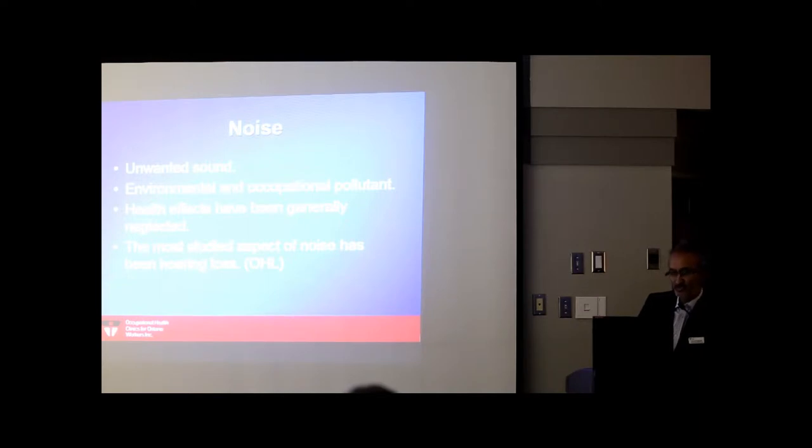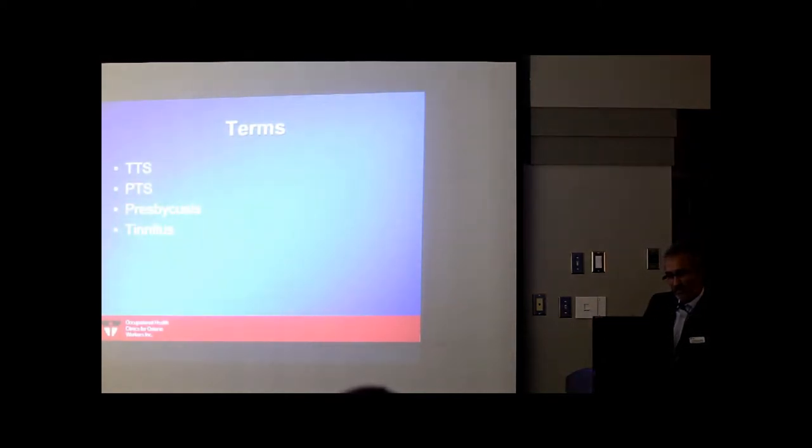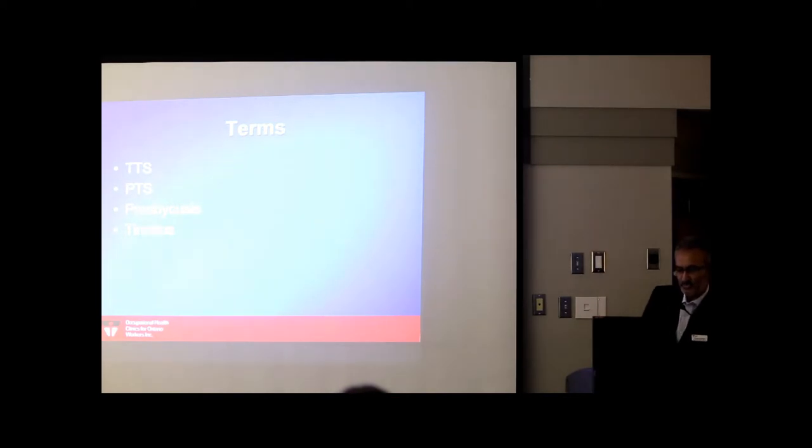The most studied component of hearing loss has been occupational hearing loss. Some quick terms: temporary threshold shift means you're exposed to noise, your hearing adapts in a certain mechanism. You get a downsloping of your audiogram. It may last up to 24 hours, 48 hours maximum usually, and you recover back to regular hearing. Permanent threshold shift means basically you have permanent damage to your hearing. Presbycusis is hearing loss due to age, usually starts around the age of 50. In Ontario, by the WSIB, it's recognized as something starting at age 60 and there's a correction factor where they take out that hearing loss.